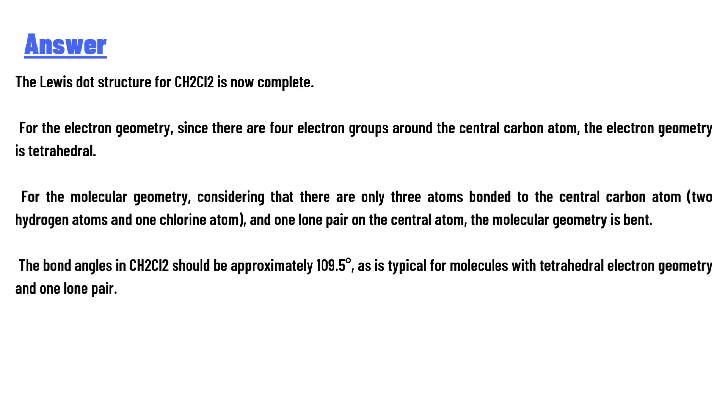For the molecular geometry, considering that there are only three atoms bonded to the central carbon atom (two hydrogen atoms and one chlorine atom) and one lone pair on the central atom, the molecular geometry is bent.